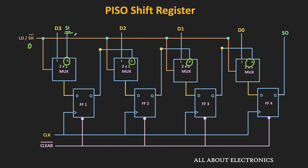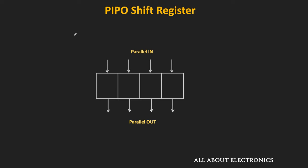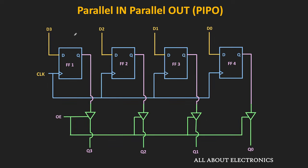That is all regarding the Parallel In Serial Out type of shift register, which is useful for parallel-to-serial data conversion. The next type is the Parallel In Parallel Out type of shift register, also known as the PIPO register. In this type, data is loaded parallelly and also taken out parallelly. The clock signal is common to all flip-flops, but the data is loaded separately in each flip-flop and taken out individually. In commercially available PIPO registers, there are also tri-state buffers just before the outputs, so the output of the flip-flop is available at the output pins only when these buffers are enabled.